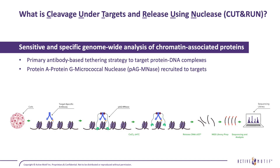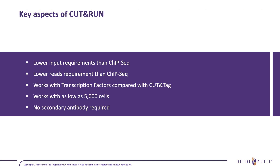What is Cleavage Under Targets and Release Using Nuclease? CUT&RUN is an NGS assay which allows you to sequence DNA proximal to proteins of interest in the chromatin. It uses a micrococcal nuclease fused with Protein A and Protein G, which allows it to associate with an antibody specifically targeted to your protein of interest.